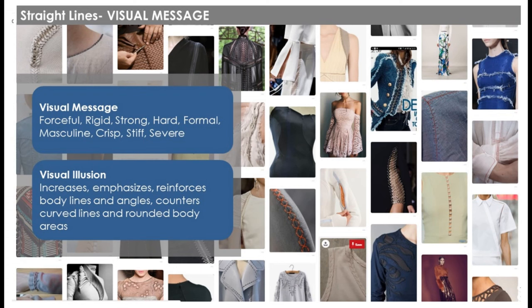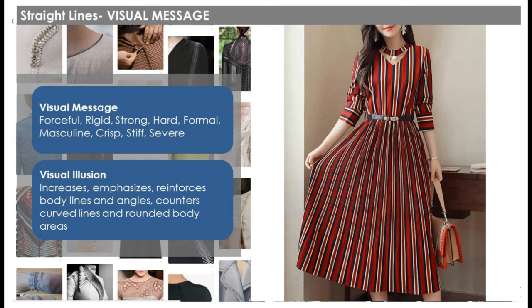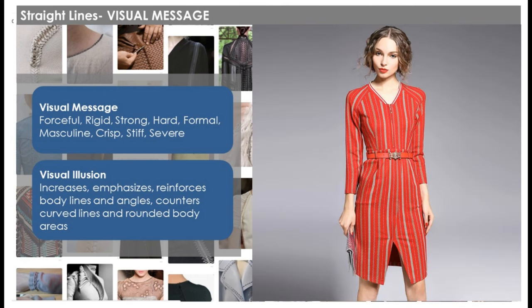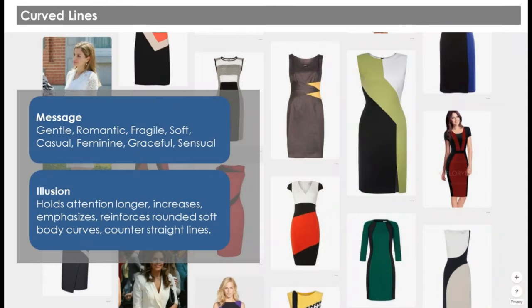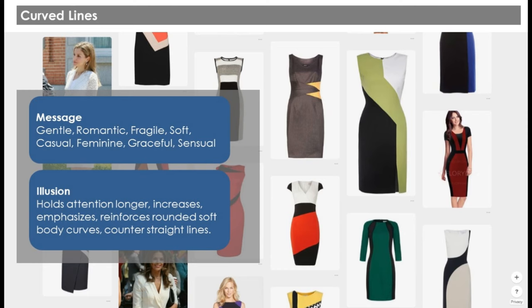Every line gives a message. Straight lines convey forceful, rigid, strong, hard, formal, and masculine qualities. They increase emphasis, reinforce body lines and angles, and counter curved lines and rounded body areas. Curved lines give a message of gentleness, romance, fragility, softness, and femininity. They hold attention longer, reinforce rounded soft body curves, and counter straight lines and angular body areas.